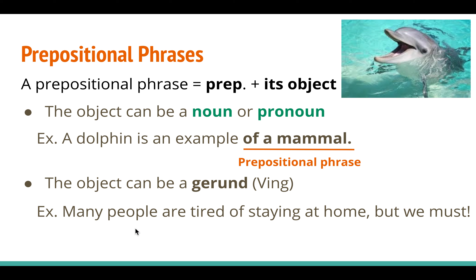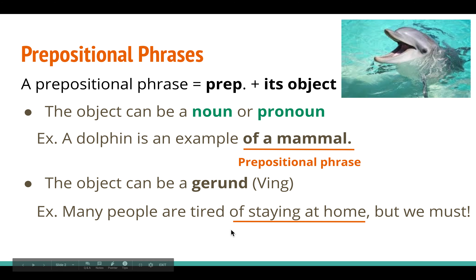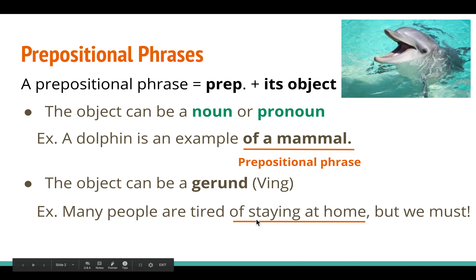Here's an example: 'Many people are tired of staying at home, but we must.' First, see if you can find the preposition, then see if you can find a gerund that goes with it. The prepositional phrase is 'of staying at home.' We have the preposition 'of' and 'staying,' which is a gerund — verb plus '-ing.' The phrase continues: 'staying at home.' Actually, here we have two prepositional phrases: 'of staying' and 'at home,' where 'at' is another preposition and 'home' is its object.